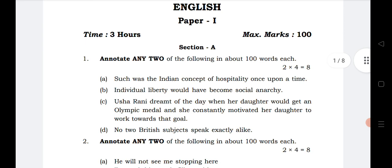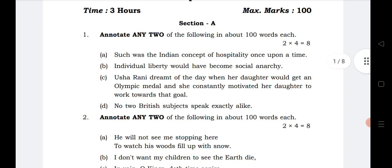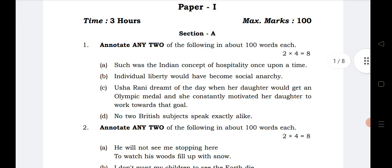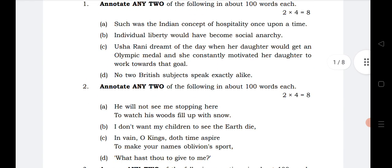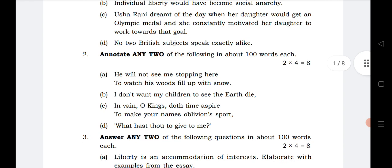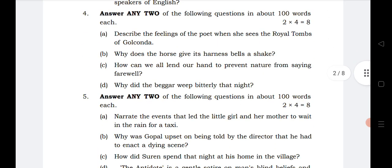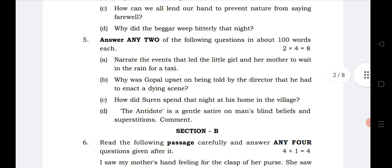We know that for section A from bit number one to bit number five you have annotations, but this year you are getting 50% options extra. Out of four questions of first bit you have to do only two questions. Second question out of four, two questions. Third question out of four you have to do two questions, fourth also same, fifth also same. This is about annotation and paragraph question.